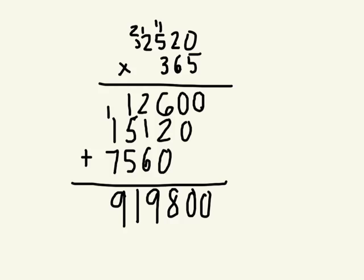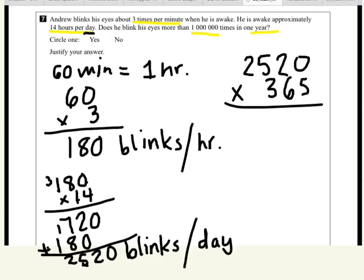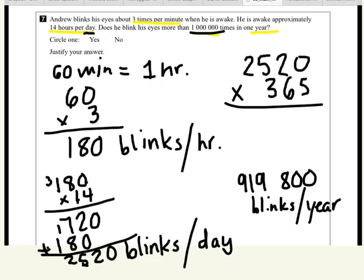So, the way we read this number is nine hundred and nineteen thousand eight hundred. Now, what did the original question say? It asked, read the entire thing. Yeah, well, what is the last question? Done a million times in one year. Yeah, does, is that more than a million? So, the answer we got was nine hundred and nineteen thousand eight hundred blanks per year. Is that more than a million? No.